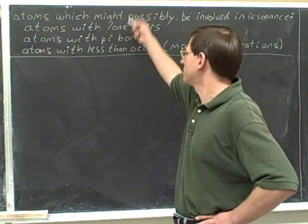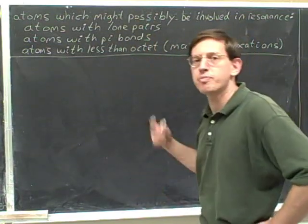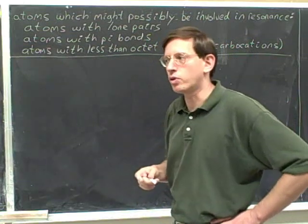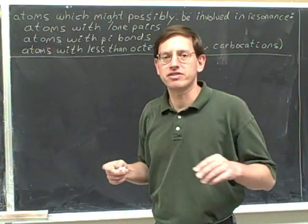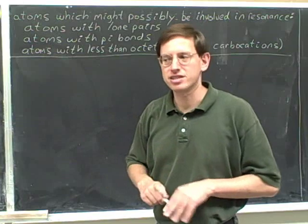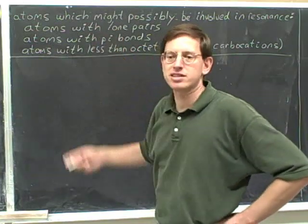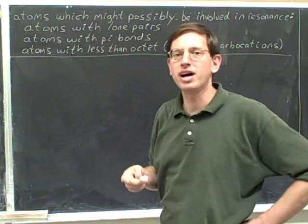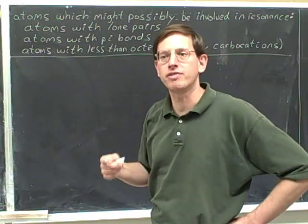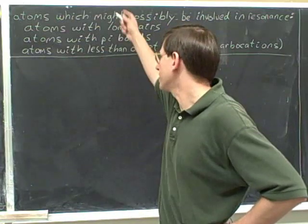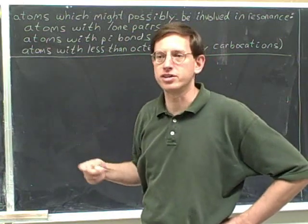Usually, atoms in this list are atoms that can form resonance. Another point is that resonance takes two — there have to be two atoms to have resonance. So it doesn't do any good to have an atom in this list unless it's bonded to another atom in this list. In order to have resonance, you have to have two atoms with these characteristics that are bonded to each other.